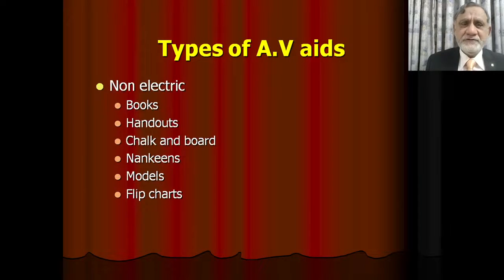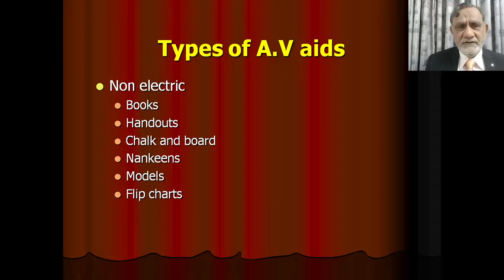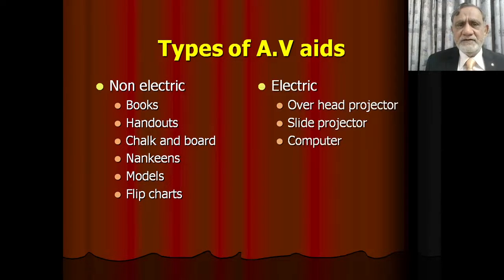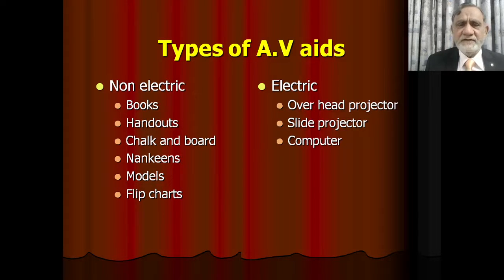Now, types of AV aids. A broad classification is that there are AV aids which are electric and AV aids which are non-electric. For instance, books, handouts, chalk and board, models, and flip charts are non-electric. Whereas the overhead projector, slide projector, and PowerPoint slides used in computers are types of electric AV aids.